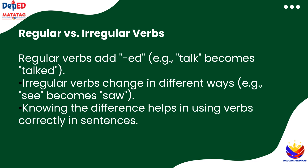Let's compare regular and irregular verbs. Regular verbs follow the simple rule of adding -ed, like talk to talked. Irregular verbs, however, don't follow this rule. They change in their own way, like see to saw. Understanding the difference between regular and irregular verbs helps us use them correctly when we speak or write about things that happened in the past.